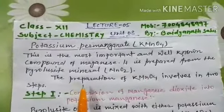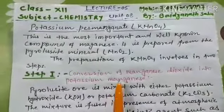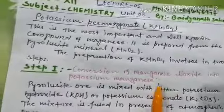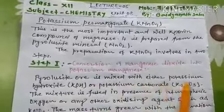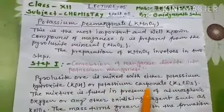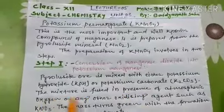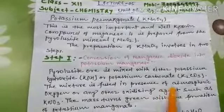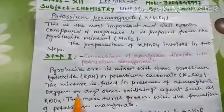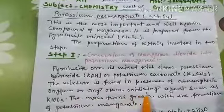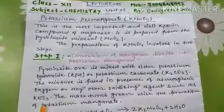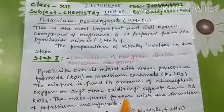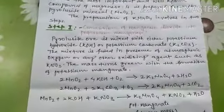Preparation of potassium permanganate involves two steps. In the first step, conversion of manganese dioxide into potassium manganate takes place. In this step, pyrolusite ore is mixed with either potassium hydroxide or potassium carbonate. The mixture is fused in the presence of atmospheric oxygen and an oxidizing agent such as potassium nitrate. The mass turns green with the formation of potassium manganate.